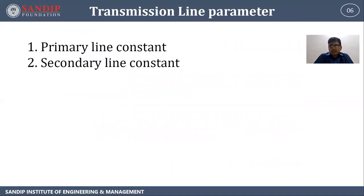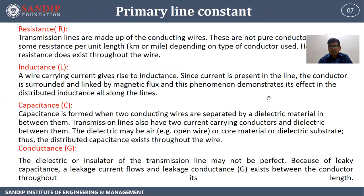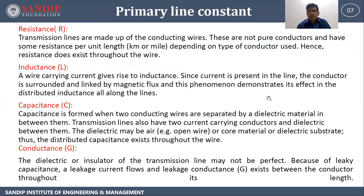Transmission line parameters: there are two types — primary line constants and secondary line constants. The primary line constants include resistance, inductance, and conductance.